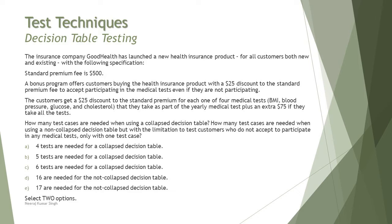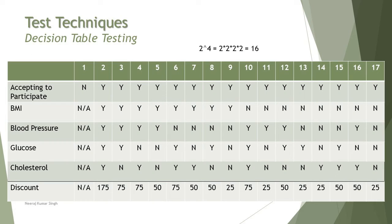Considering this scenario, let's look at the decision table created from it. The first column represents the condition of accepting to participate, followed by the four tests — so there are only five conditions total. If the user does not accept to participate, all other tests are non-applicable, and that counts as one test case. If the person accepts, we have the four tests with 2 raised to the power of 4, giving 16 possible combinations.